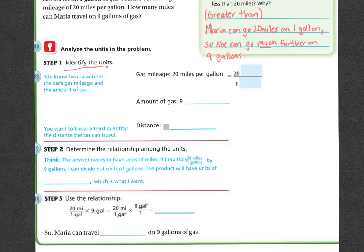So step one, let's identify the units. You know two quantities: the car's gas mileage and the amount of gas. So gas mileage, 20 miles per gallon. So we already said it in the problem, 20 miles. So this is going to be miles per gallon, per one gallon. The amount of gas is nine gallons.